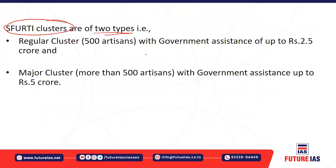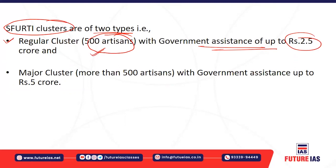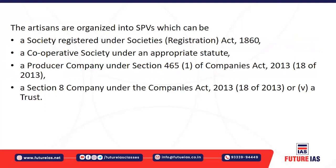SFURTI clusters are of two types based on the number of artisans involved. Clusters with up to 500 artisans are eligible for government assistance of 2.5 crore rupees. For major clusters with more than 500 artisans, government assistance of around 5 crore rupees is provided.